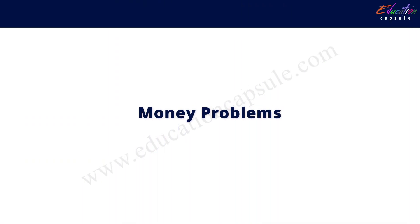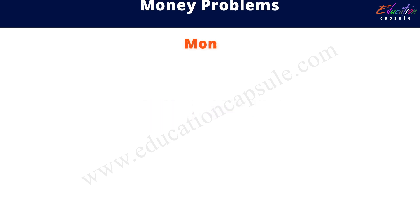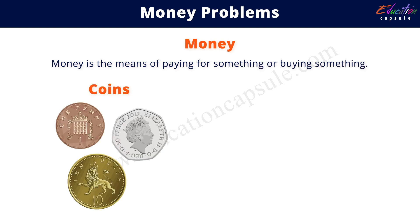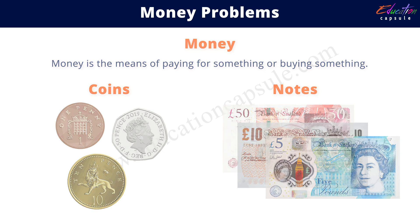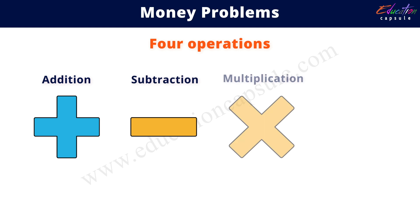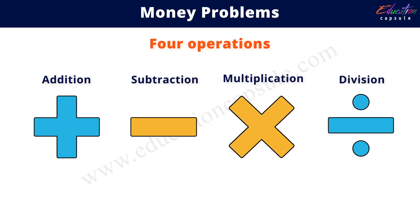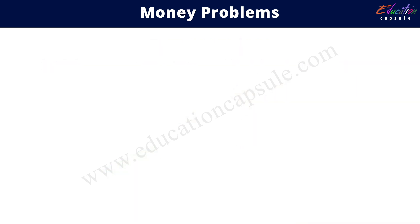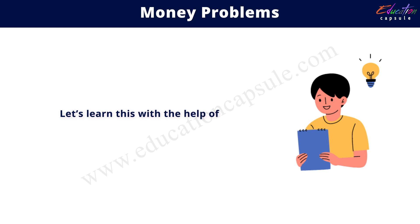Today we are going to learn about money problems. Money is the means of paying for something or buying something — it is in the form of coins or notes. There are four different operations we'll be using for this: addition, subtraction, multiplication, and division.